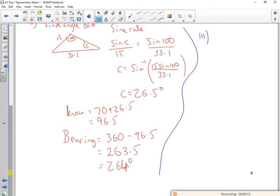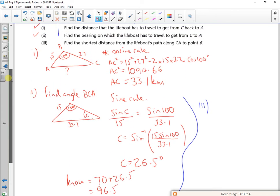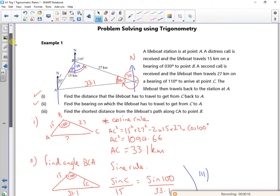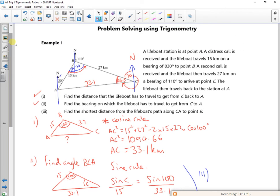So part three wants you to work out the shortest distance from the lifeboat's path to point B. I'm going to put it on in black. Now it has to be at right angles to it and it's not obvious because A to C isn't flat, so a right angle doesn't line up with a north line, so you've got to be careful about it. So I want this distance here, the shortest distance.